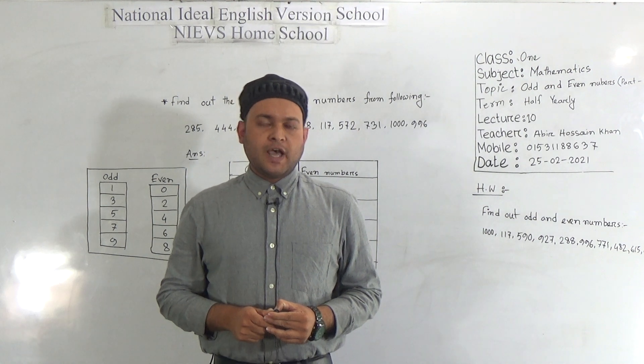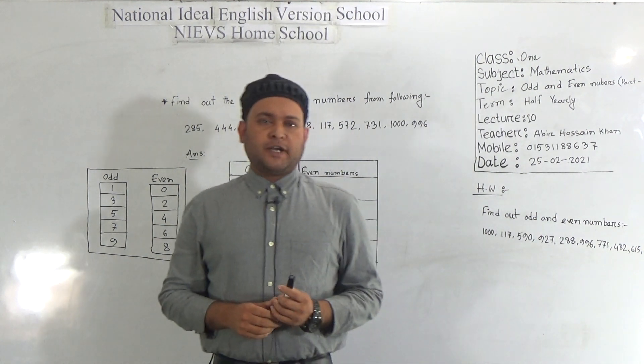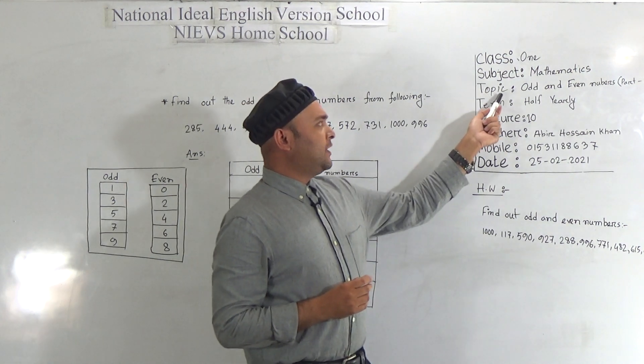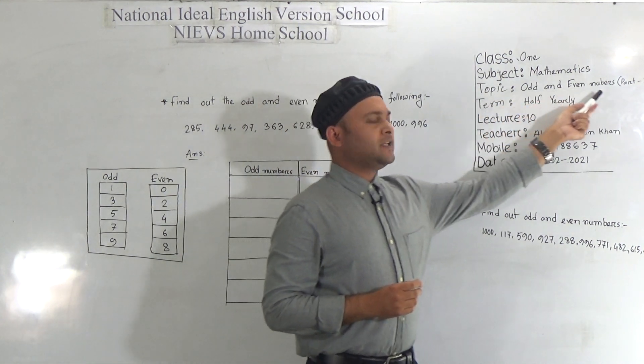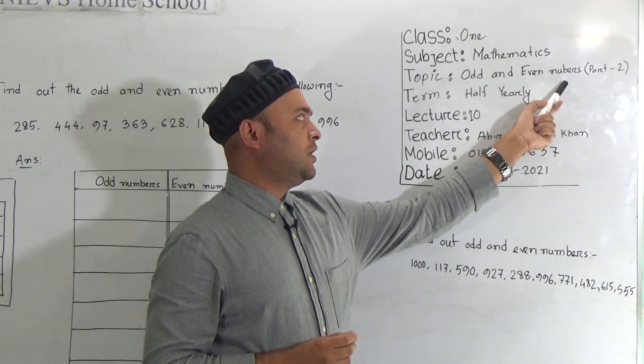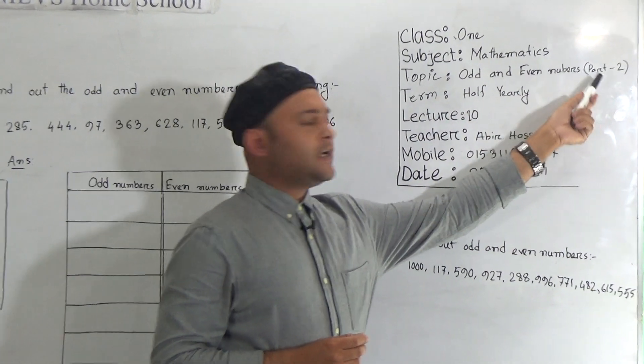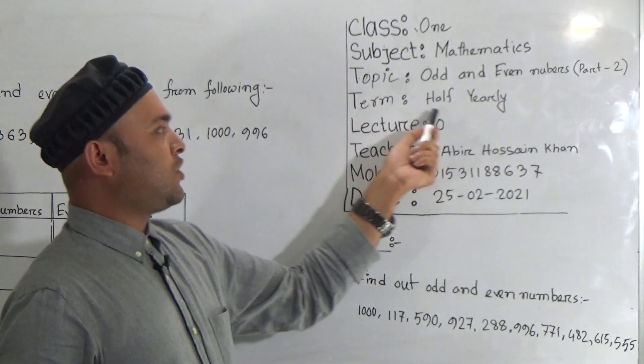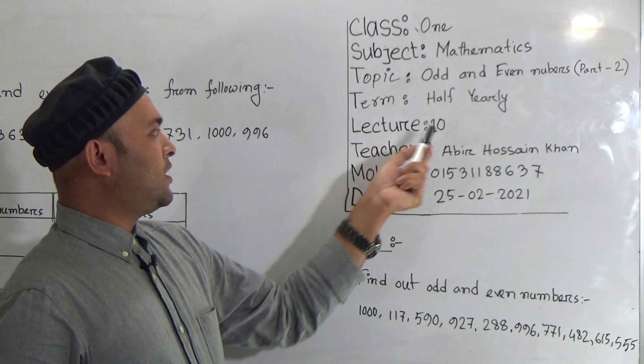For Class 1, according to the last class, my dear students, you have known that our topic is odd and even numbers. Our topic is odd and even numbers, part 2. In the last one, you completed part 1. This is the syllabus of Chapter 1, and our lecture number is 10.